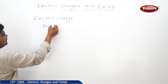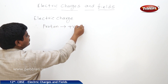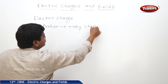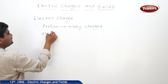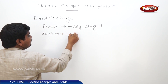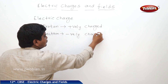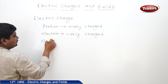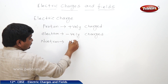Proton is positively charged. Electron is negatively charged. Neutron is neutrally charged.